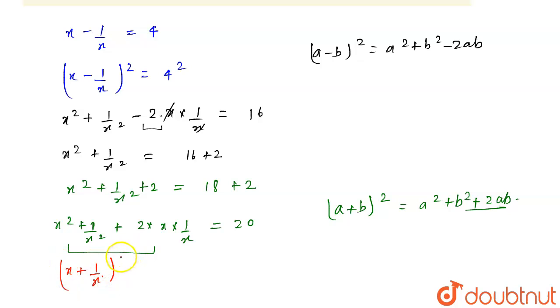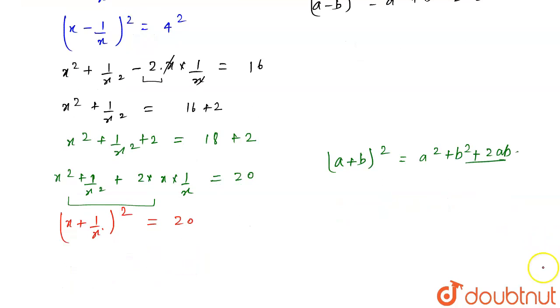So we can write this as x plus 1 upon x to whole square is equal to 20. So from here the value of x plus 1 upon x will become plus minus root 20.